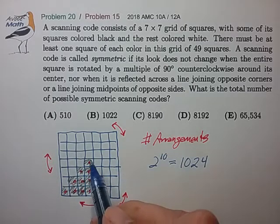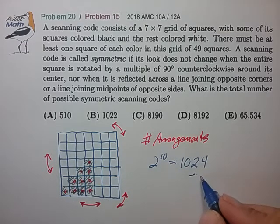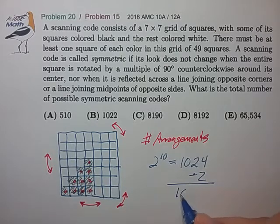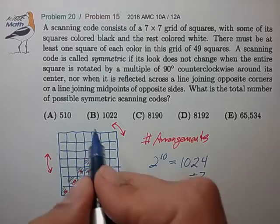But two of these arrangements are not allowed—we can't choose all boxes to be black or all white. So we have to adjust this down to 1022 for the number of allowable arrangements, which is choice B.